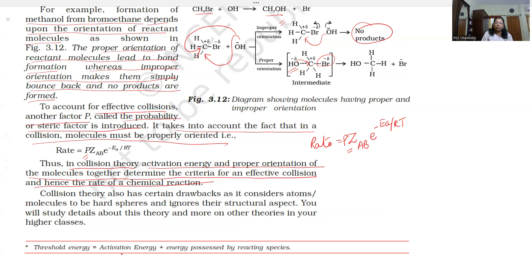The collision theory also has certain drawbacks, as it considers atoms or molecules to be hard spheres and ignores their structural aspects. The molecular structure is ignored, which is the main limitation — molecules are simply treated as hard spheres.